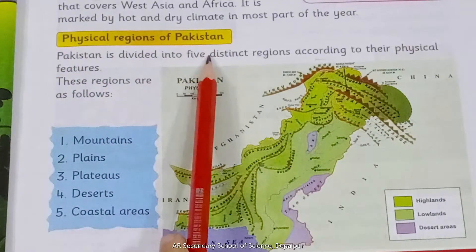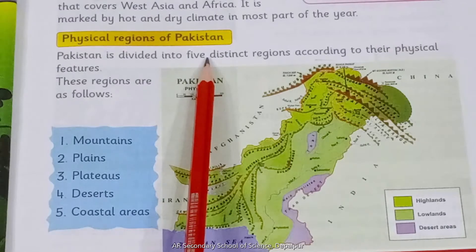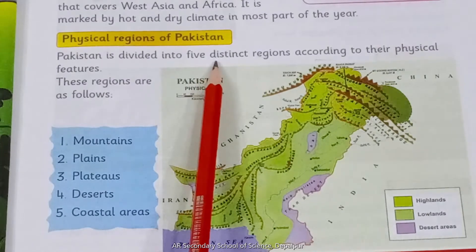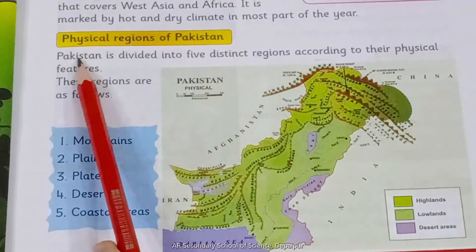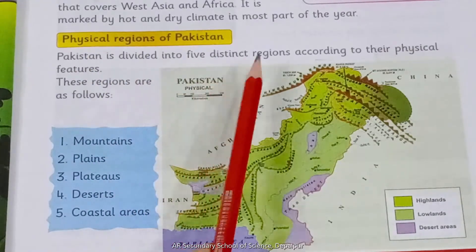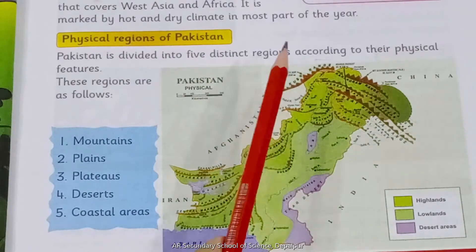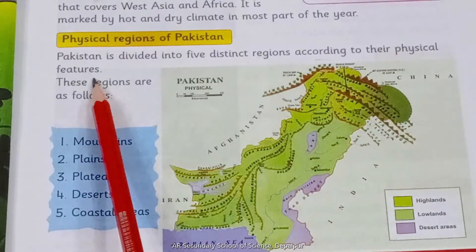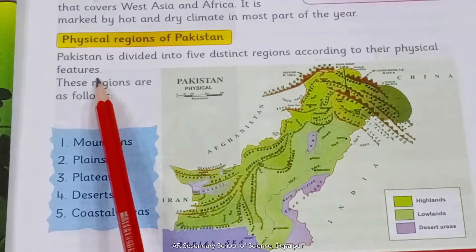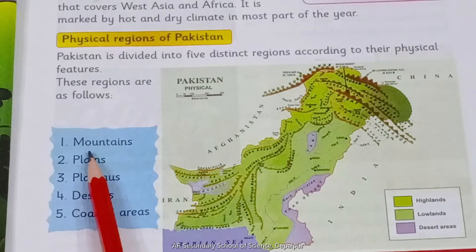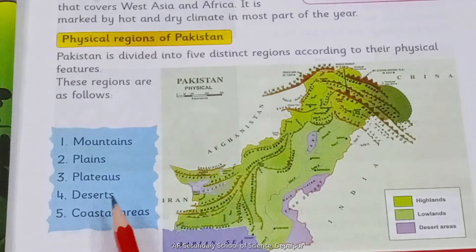Physical Regions of Pakistan: Pakistan is divided into five distinct regions according to their physical features — Pakistan ko paanch regions mein taqseem kiya gaya hai fitri khudukhal ke lihaaz se. These regions are: mountains, plains, plateau, deserts, and coastal areas.